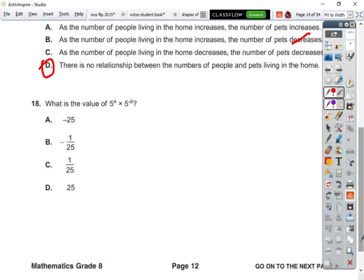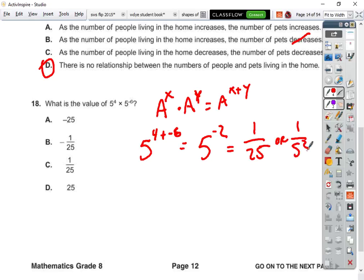18. What is the value of that? Okay. So, the rule is, you add the exponents if the base is the same. So, in this case, we have five to the fourth plus negative six, which is equal to five to the negative second. But remember, you can't have the negative exponent, so this is equal to one over 25, or one over five squared. And that is that one.